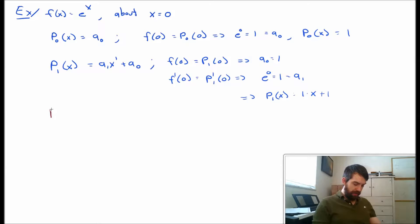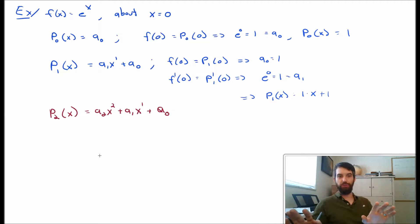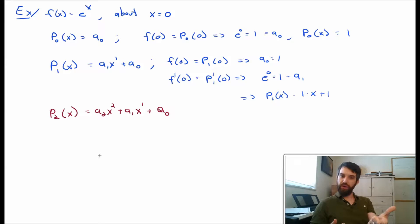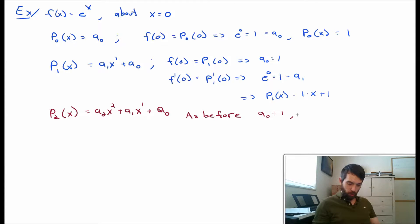I'm going to do one more: approximate by a quadratic polynomial p2, which has an x squared term, an x to the first power term, and a constant term a0. I demand the functions are equal at x equal to 0, the derivatives are equal at x equal to 0, and the second derivatives are equal at x equal to 0. The same calculation shows a0 equals 1 and a1 equals 1, since the a2 x squared term still has an x when only one derivative is taken and vanishes at 0.